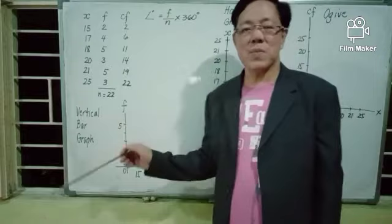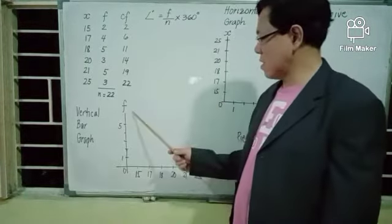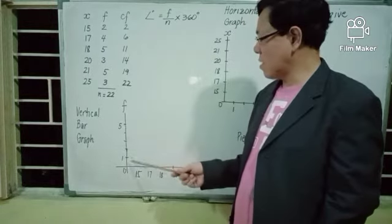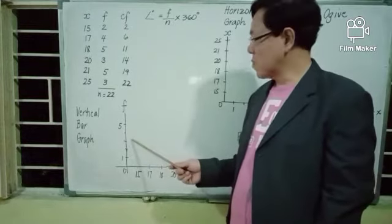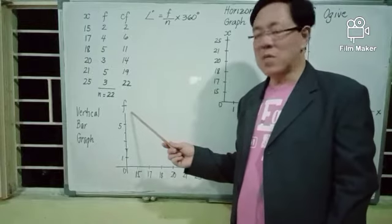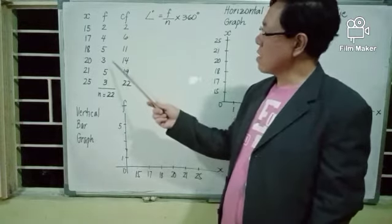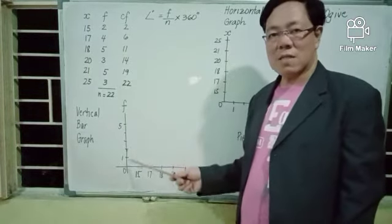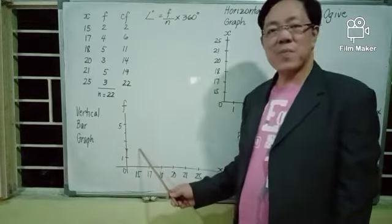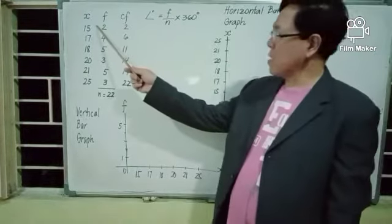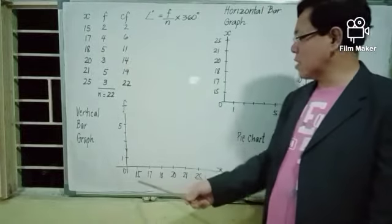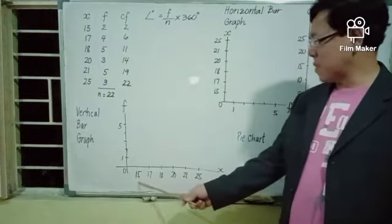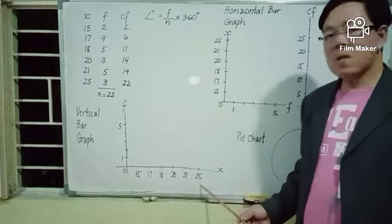We start with the vertical bar graph. To draw the vertical bar graph, we write the frequencies in the vertical axis, denoted by F for frequencies. I chose to use one-unit intervals for the vertical axis. Your decision on what intervals to use depends on the lowest and the highest frequencies. Since the lowest frequency is 2 and the highest is 5, I use a one-unit interval. You write the scores in order as they appear in the frequency table in the horizontal axis, denoted by X, equally spaced.